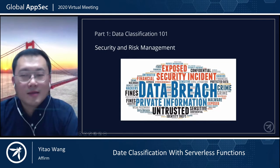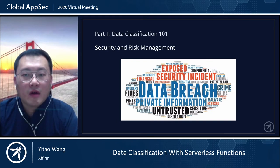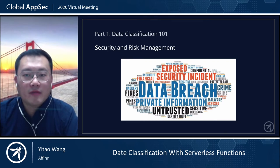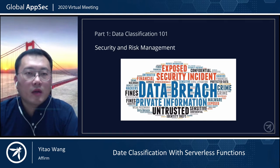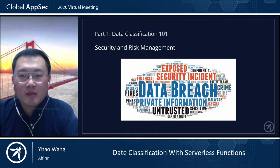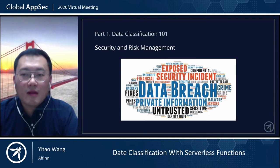On the other side, we want necessary controls in place to protect sensitive data as well. That means data classification is a fundamental step in cybersecurity risk management. It involves identifying the types of data that are being processed and stored in information systems owned by or operated by your organizations. We've heard a lot of data leaks due to improper S3 bucket permissions or unencrypted database backups. One of the reasons this type of incident happens is that the controls are not in place for the data that's being stored or processed.